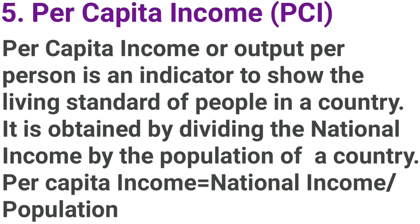Next, per capita income, PCI. Per capita income, or output per person, is an indicator to show the living standard of people in a country. It is obtained by dividing the national income by the population of a country. Per capita income equals national income divided by population.